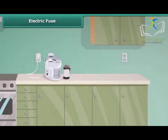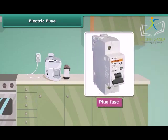Fuses of different kinds are used for different purposes. A plug fuse is used in our houses. The plug fuse consists of two parts: the porcelain casing and the porcelain grip. This fuse has a thin wire of tin and lead alloy, which has a low melting point. A cartridge fuse is generally used in electrical appliances.